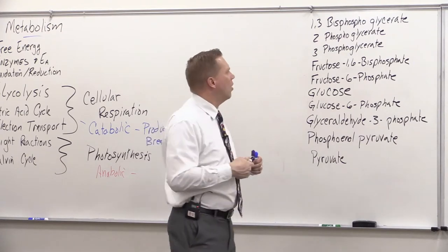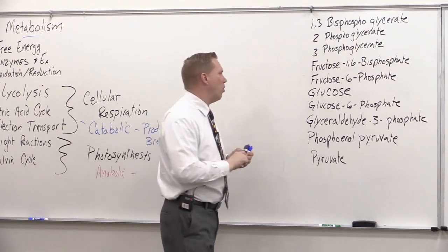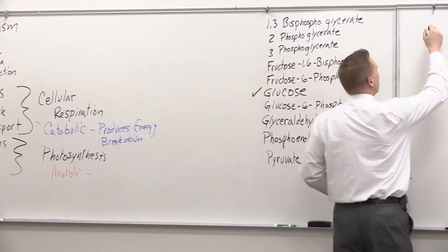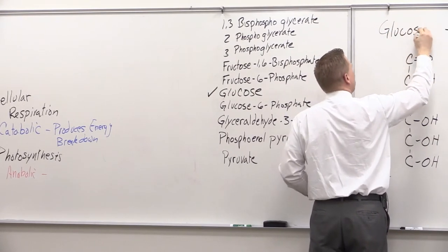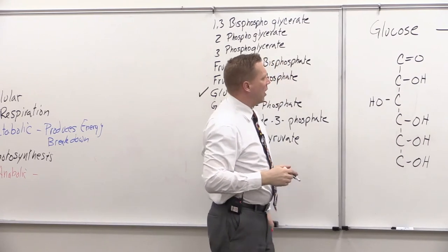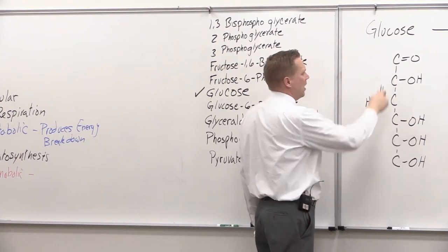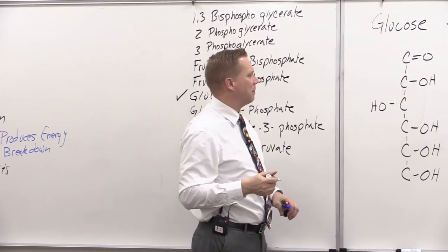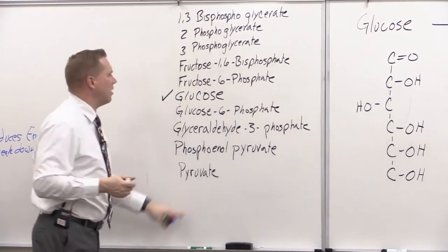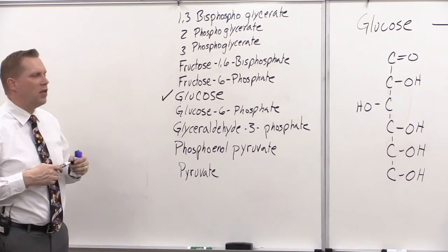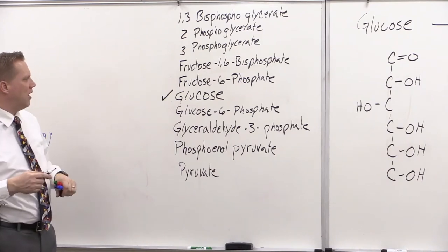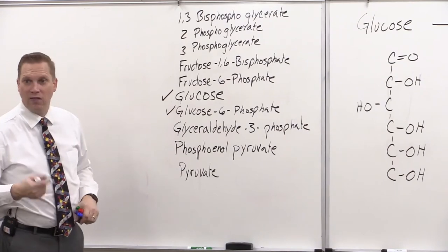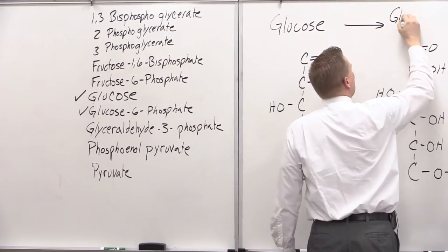We have to have a starting point. Most people know the pathway starts with glucose. Glucose is the first intermediate — a six-carbon hexose chain with a carbonyl group and a bunch of hydroxyls. If glucose is where we start, then the most logical next intermediate, making only a small change, would be glucose-6-phosphate. And you'd be correct. Glucose-6-phosphate is the next intermediate.